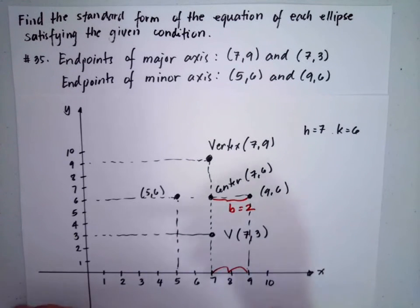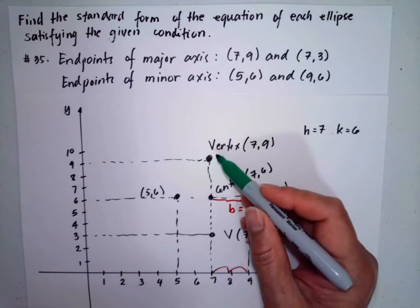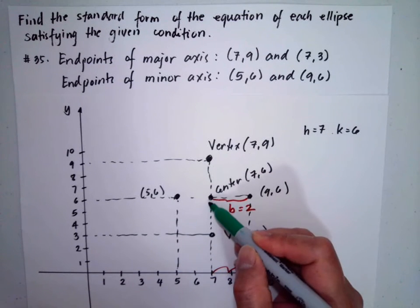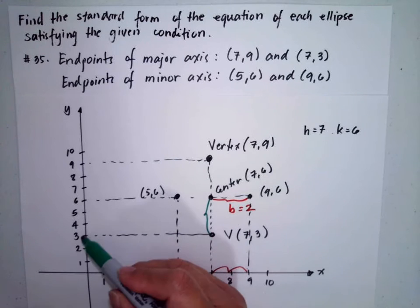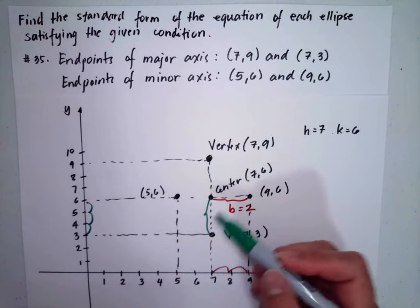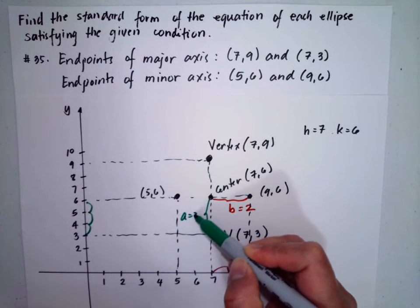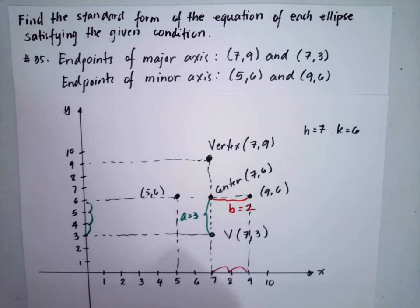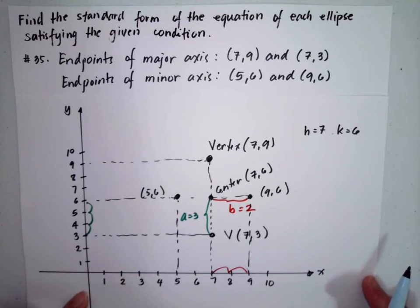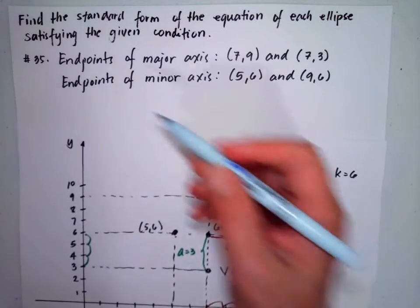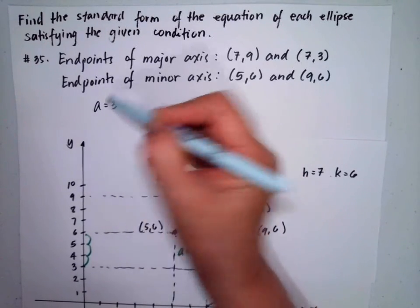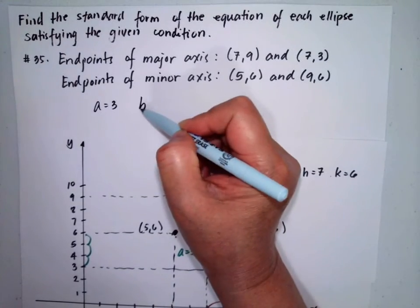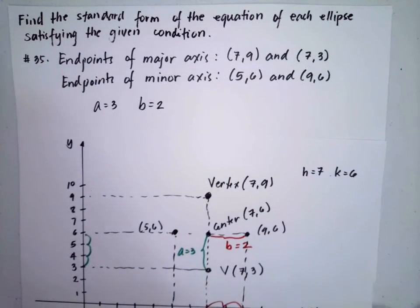Our b is 2 points, so b is equal to 2. And our a represents the major axis. Counting 1, 2, 3 — our a is equal to 3. So we have a equals 3 and b equals 2.